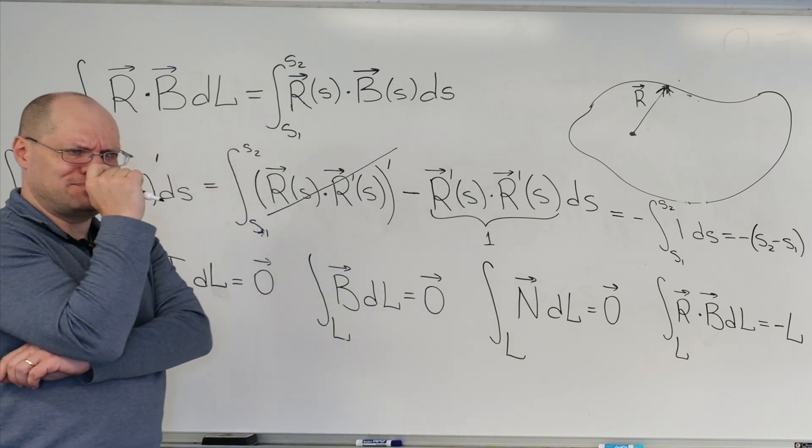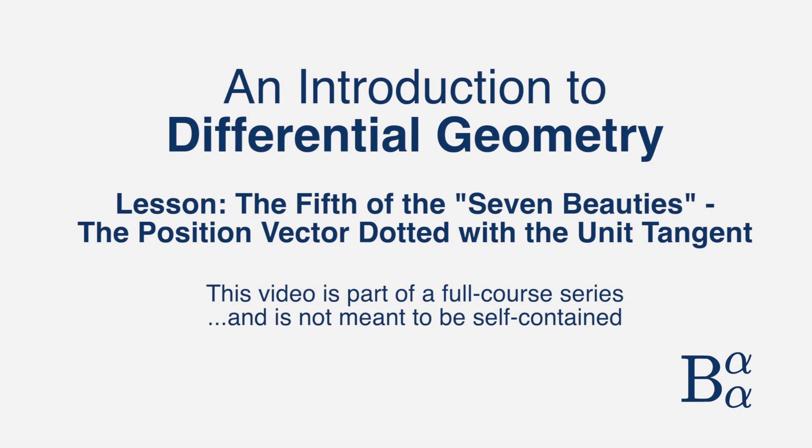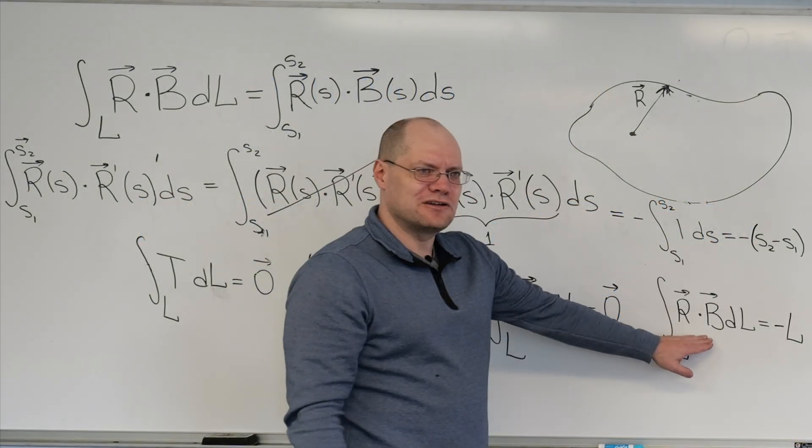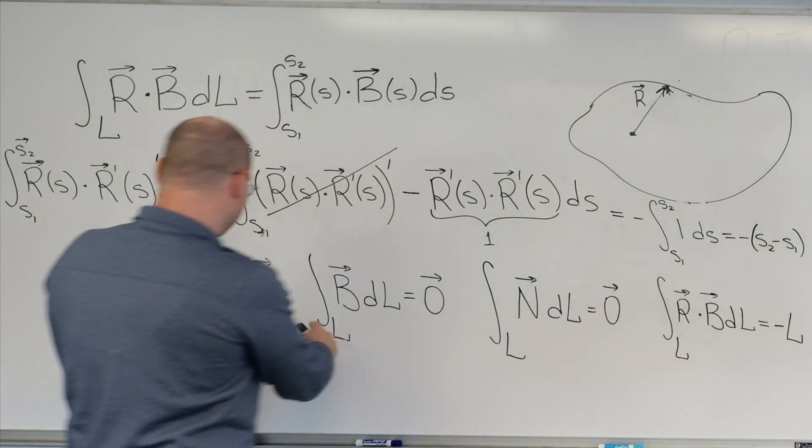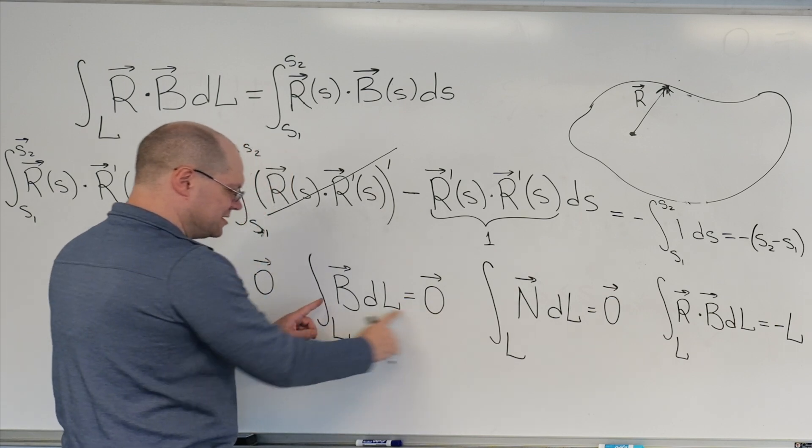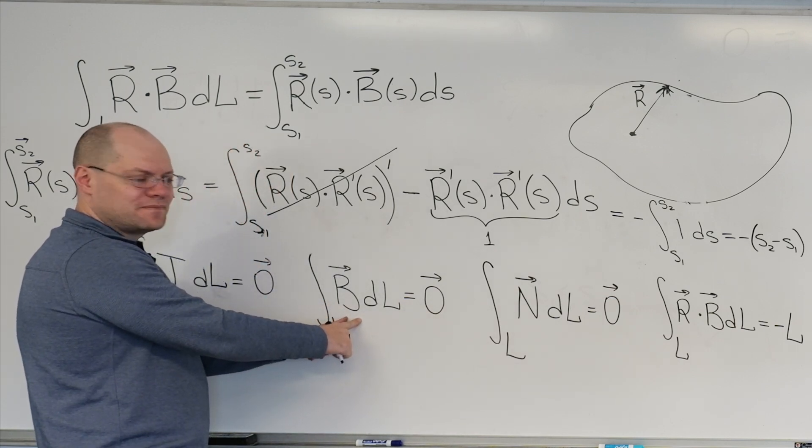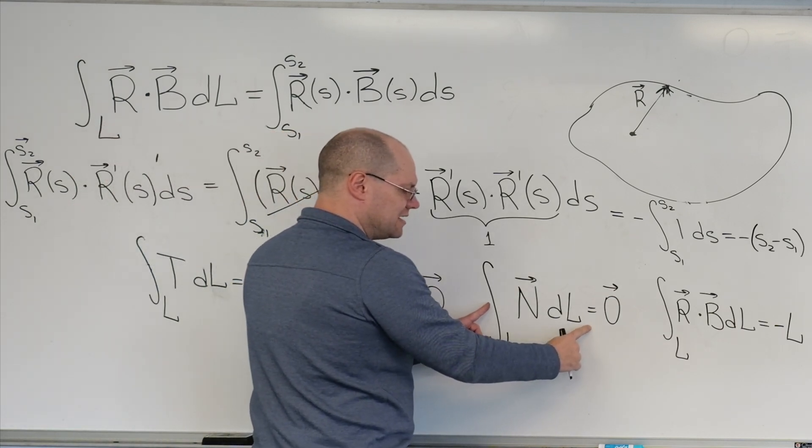What about R dotted with T? Do I have a beauty for that? What are we gonna do next? Well, because we have this, we did R dotted with B. Then there is R dotted with N.